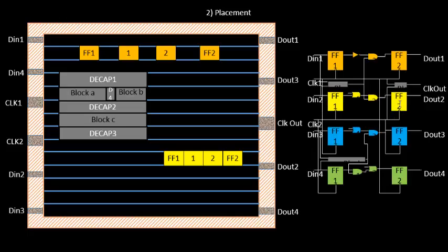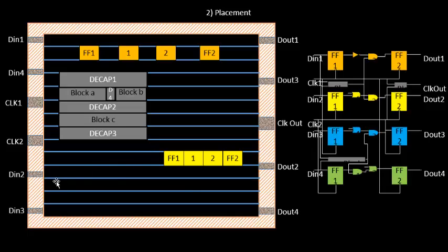Similarly for the next section — DIN1, flip-flop 1, flip-flop 2, DOUT2 — flip-flop 1 is placed close to the first section and flip-flop 2 is placed close to DOUT2. There's a peculiar case where the combinational cells are abutted together, making delays between flip-flop 1, the combinational cells, and flip-flop 2 very minimal. We'll cover the reasons for these placement decisions in the next video.